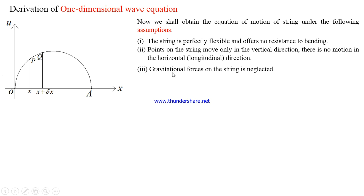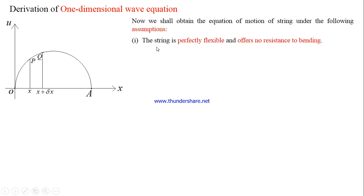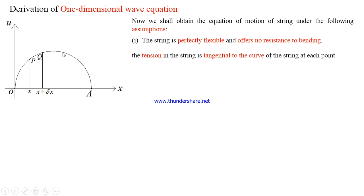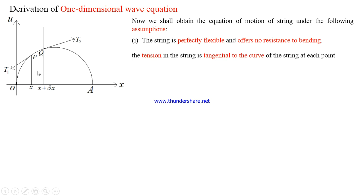The first assumption tells us that the string is perfectly flexible and offers no resistance to bending, which means the tension in the string is tangential to the curve of the string at each point. With respect to element PQ, let T1 be the tension acting on the element at point P and T2 be the tension acting at point Q.